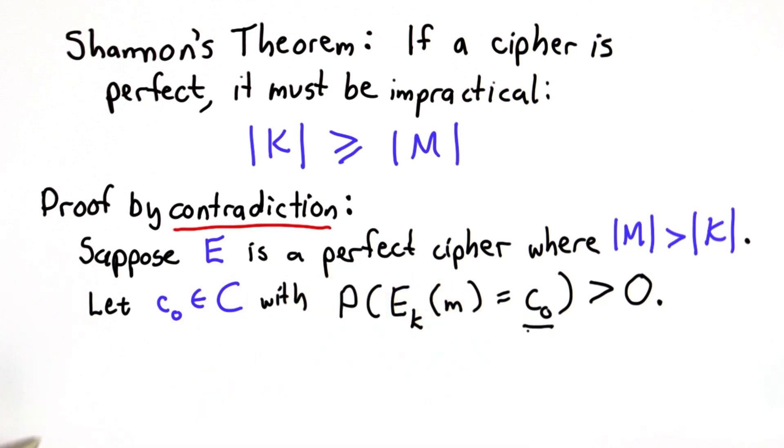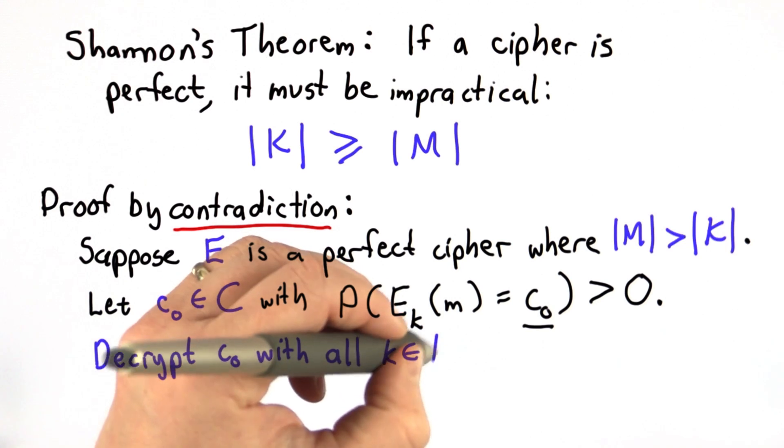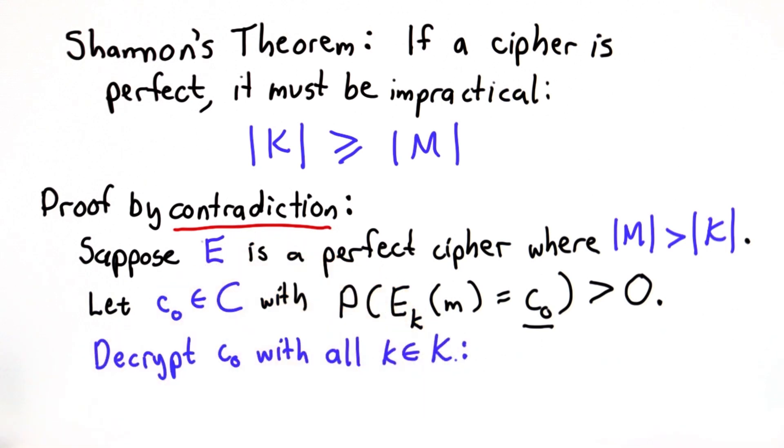Now we have our ciphertext C0. Let's try decrypting that. So we'll decrypt it with all keys in the key space. So we haven't mentioned what the decryption function is. For the one-time pad it's exactly the same as the encryption function. For this we don't want to assume this, it could be any function. So we'll assume there's some function D that's our encryption function.